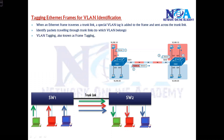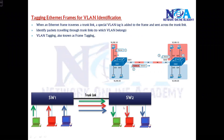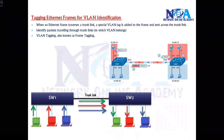We call this process the VLAN tagging process, or simply the frame tagging process. There are different names generally used for identification. Now let's see how it works. The tagging process is actually required on the trunk link for identification, but the question is: how does the tagging happen, and where exactly does it happen?